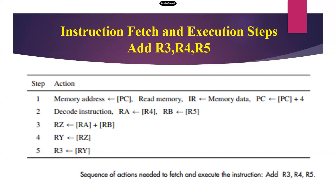Once the current instruction is moved to the instruction register, the program counter will be incremented by 4 automatically — since this is a 32-bit architecture. Whenever the current instruction is moved to IR, the program counter automatically points to the address of the next instruction. The instruction register analyzes and decodes the instruction: what type of instruction it is, how many operands are available. After analysis, the system knows this is an ADD instruction with three operands — one destination and two source operands.